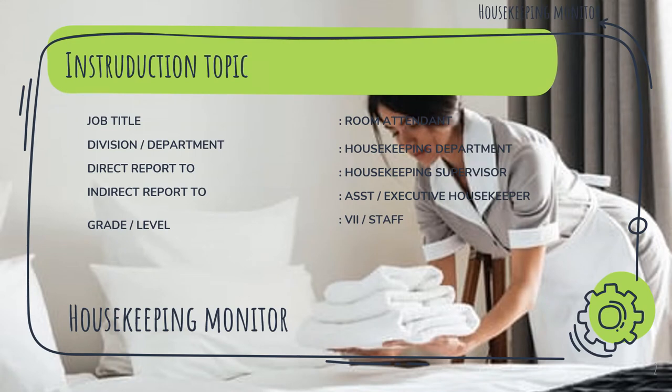Introduction Topic. Job Title: Room Attendant. Division or Department: Housekeeping Department. Direct Report to: Housekeeping Supervisor. And Direct Report to: Assistant or Executive Housekeeper. Grade or Level: 7 and Level Staff.